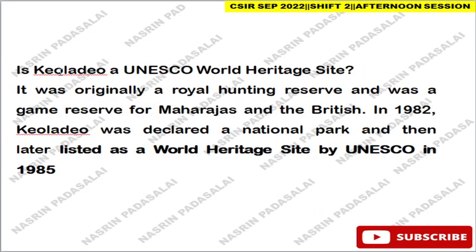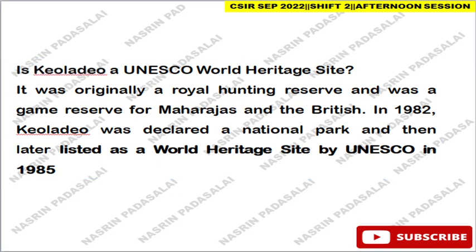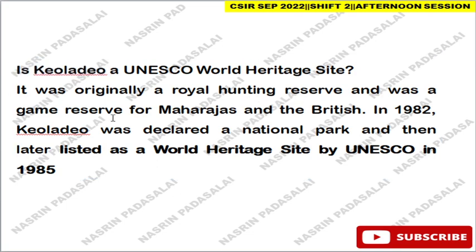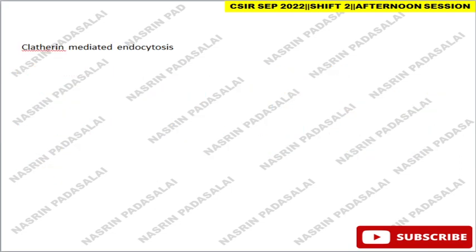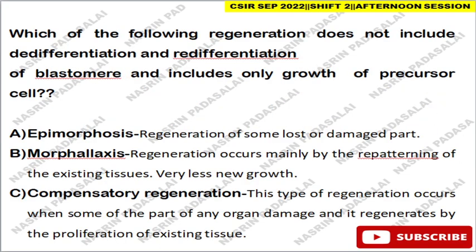Compensatory regeneration is a type of regeneration that occurs when part of an organ is damaged and it regenerates by proliferating existing tissue, like the mammalian liver. Next, is Keoladeo Ghana a UNESCO World Heritage Site? Yes — this place was originally a royal hunting reserve and a game reserve for Maharajas and the British. In 1983 it was declared a national park, and in 1985 it was designated a UNESCO World Heritage Site. That concludes the shift 2 questions. If I left out any question, please tell me in the comments. Thank you friends, thanks for watching.